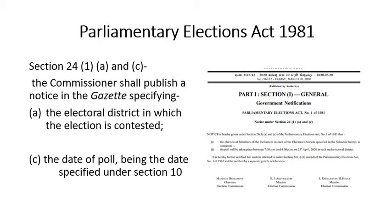Under Section 24, the notice is published by the Election Commission. The National Election Commission shall publish a notice in the Gazette specifying four matters: first, the electoral district in which the election is contested; second, the names of the candidates; third, the date of poll — the date already specified in the proclamation; and finally, the polling station.